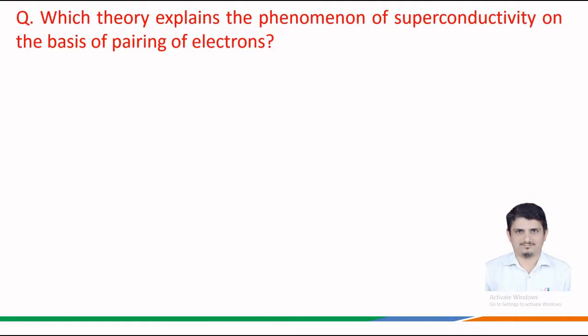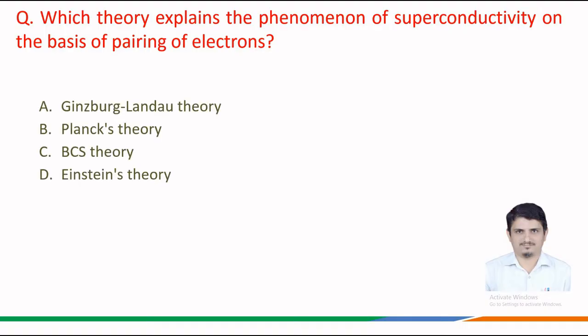Next question: which theory explains the phenomenon of superconductivity on the basis of pairing of electrons? The options given are: option a, Ginzburg-Landau theory; option b, Planck's theory; option c, BCS theory; option d, Einstein's theory.